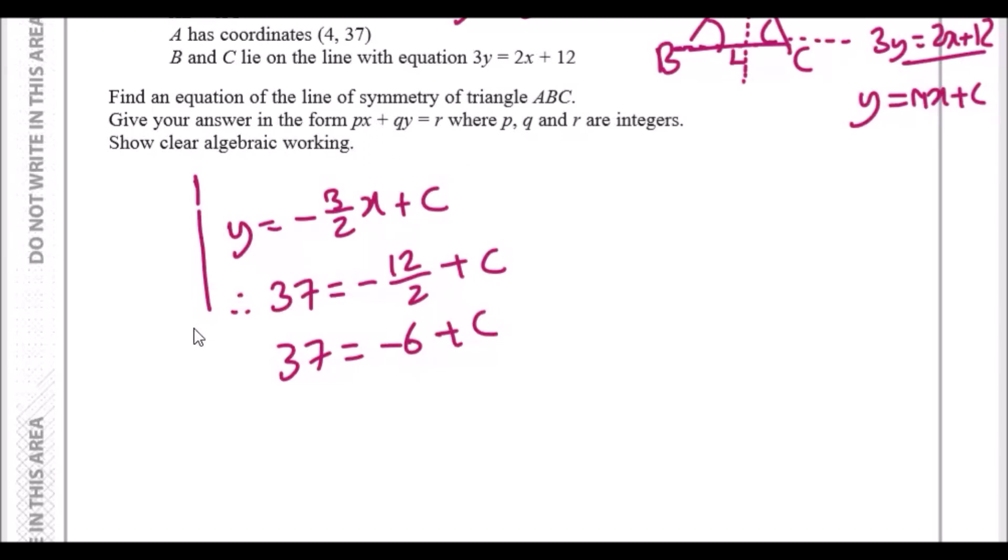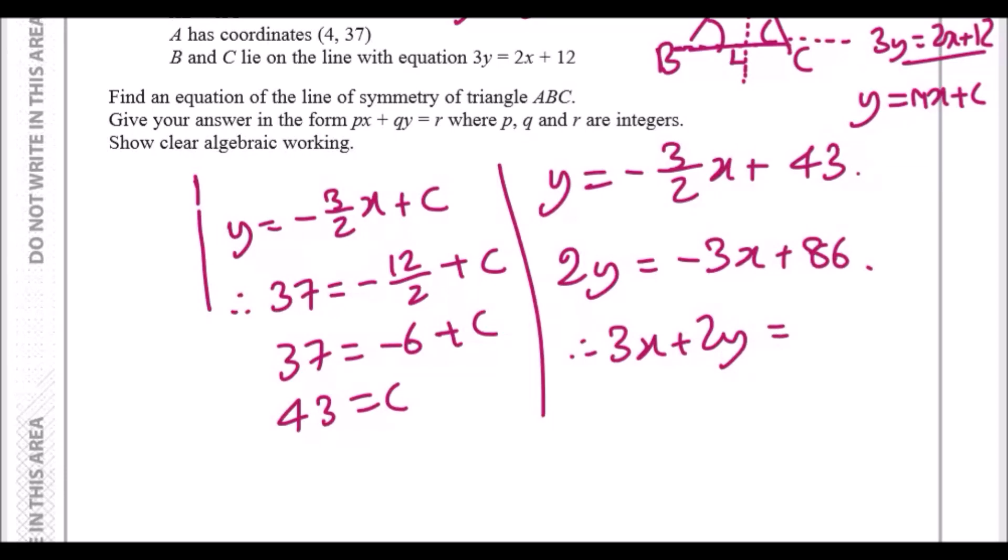Putting it back in the usual form, we've got y equals -3/2 x plus 43. The form they want us is an integer form where p, q, and r are whole numbers. To do that, just clear the fraction. Times by 2 across, we're going to get 2y equals -3x plus 86. They want px plus qy form, so we've got 3x across, so we're going to have 3x plus 2y equals 86.